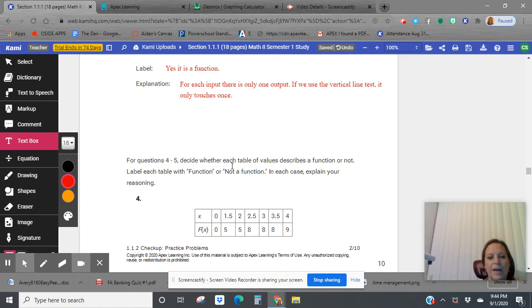For questions four to five, determine whether the table values if it's a function or not. So instead of a graph, it's now giving us a table. So I'm looking at the x values and I notice there are no repeating x values. So for every input, there's only one output.